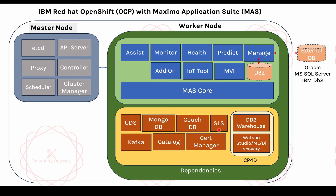The next thing is the application box, and the first item is MAS Core. MAS Core is like the TPAE platform in Maximo 7.5 or 7.6. It is the base application that provides the ability to run different add-ons and applications on top of it. It handles user management, IDP integration if you have any external identity provider, and provides tools APIs and other core APIs.